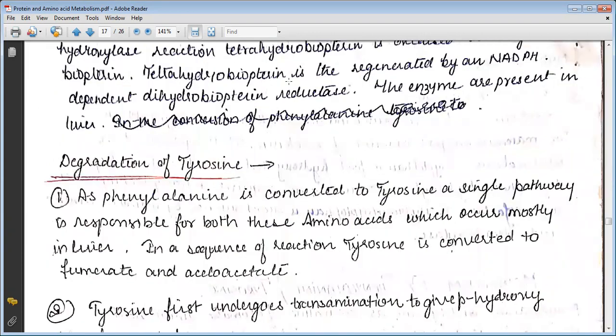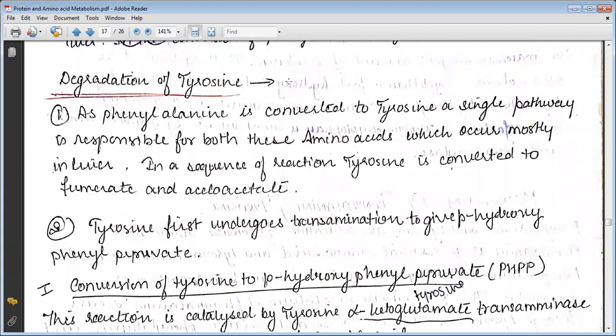This enzyme is present in the liver. For degradation of tyrosine, as phenylalanine is converted to tyrosine, a single pathway is responsible for both amino acids, occurring mostly in the liver. In a sequence of reactions, tyrosine is converted to fumarate and acetoacetate. Tyrosine first undergoes transamination to give para-hydroxyphenylpyruvate.